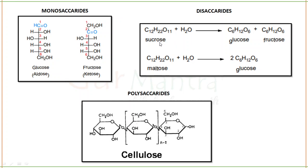Examples of disaccharides are sucrose and maltose. Sucrose has two units — one glucose and one fructose. Maltose has two units of glucose. Disaccharide means two monosaccharides together. Polysaccharide means many different units of monosaccharides arranged together — example here is cellulose.